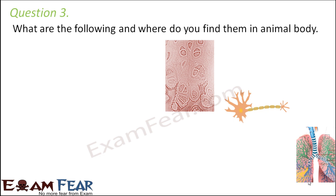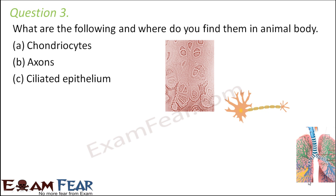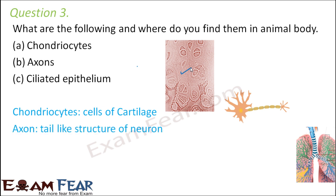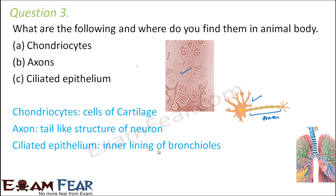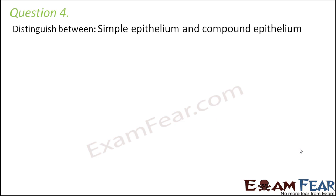Question three: what are the following and where do you find them? Chondriocytes are cartilage cells, found in cartilage, which is a connective tissue. Axons are the tail-like structures of neurons, found in nervous tissue — each cell of nervous tissue is a neuron and the tail-like structure is the axon. Ciliated epithelium is seen in the inner lining of bronchioles in the respiratory tract, where cilia help trap foreign dust particles.